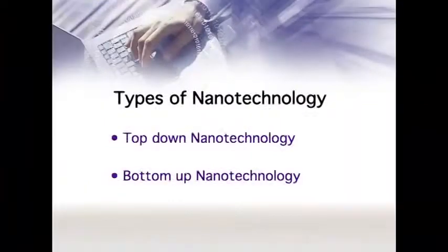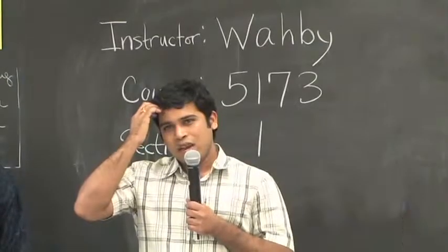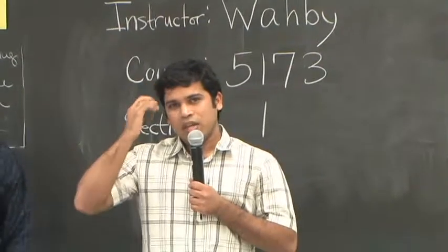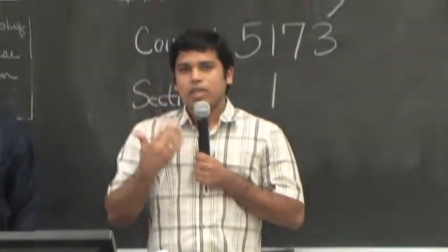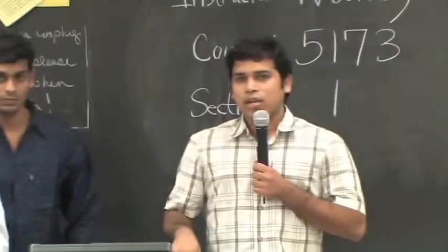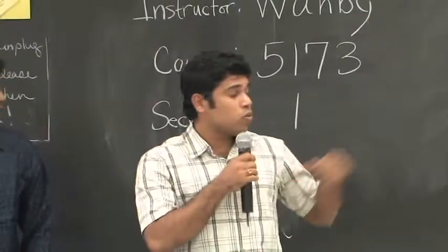Top-down nanotechnology and bottom-up nanotechnology — it depends on two ways. It is a process for any manufacturing and it takes two processes: etching, wafer etching, and different types, so it involves both ways.